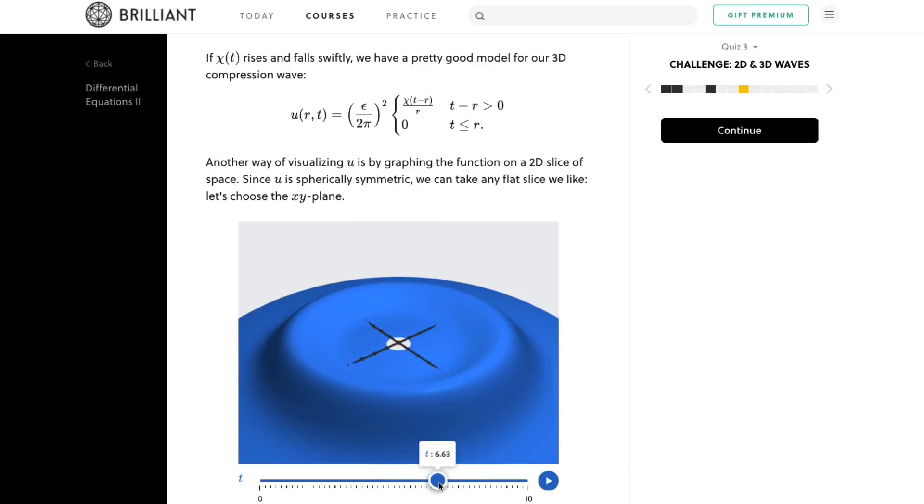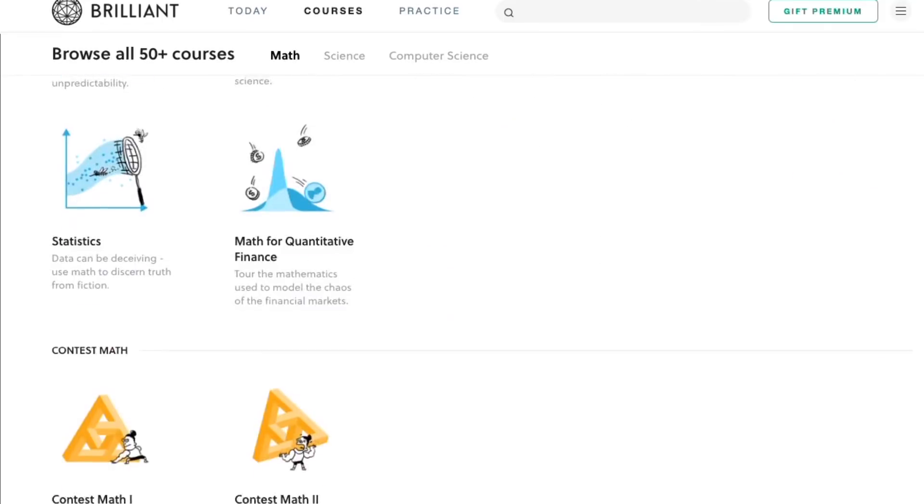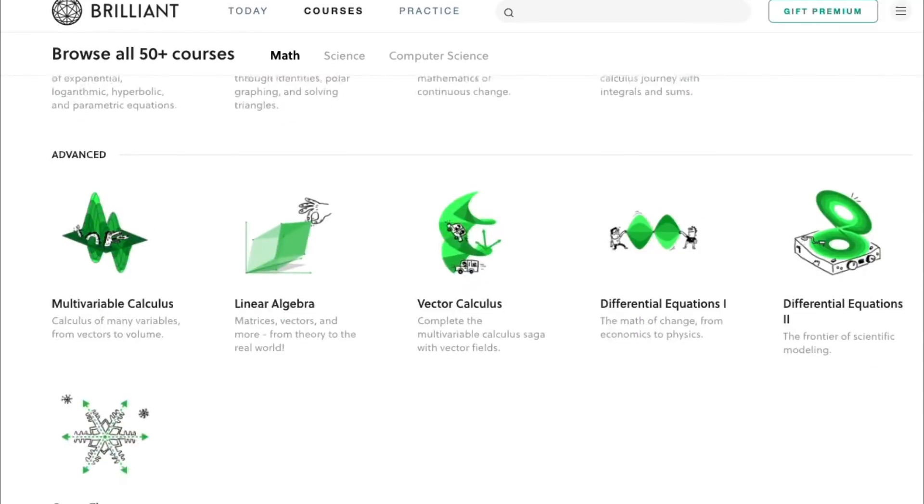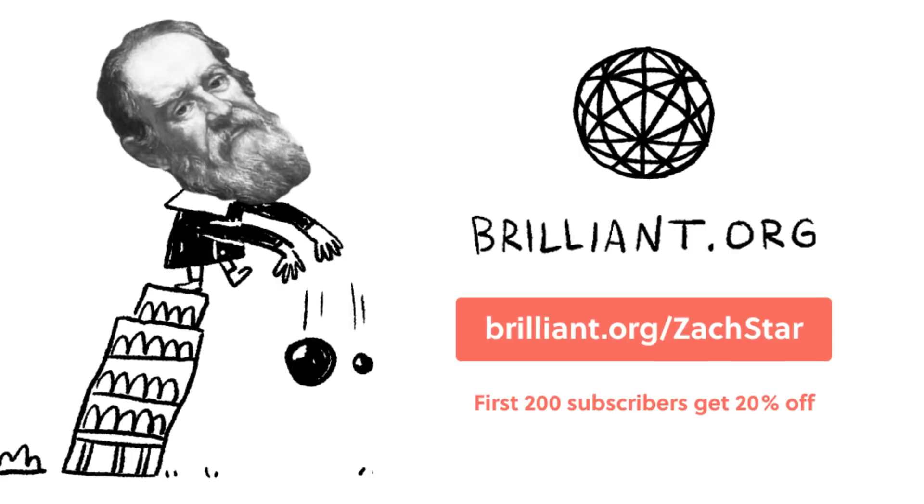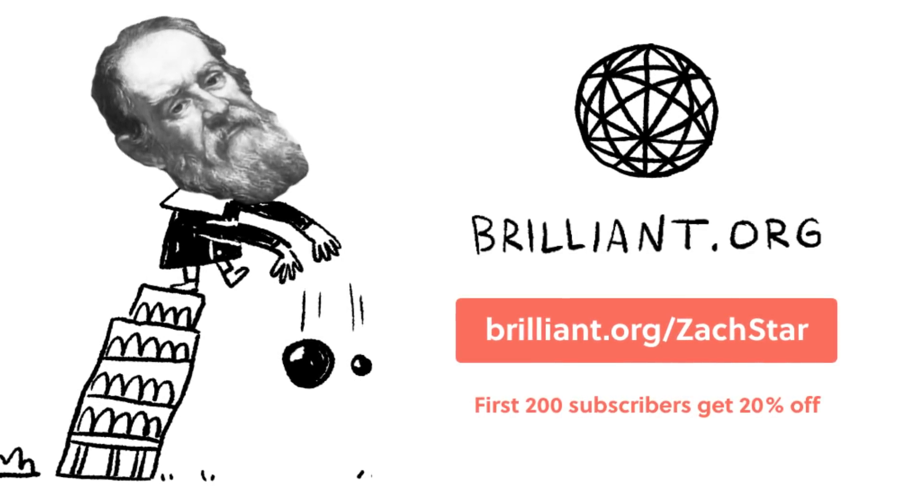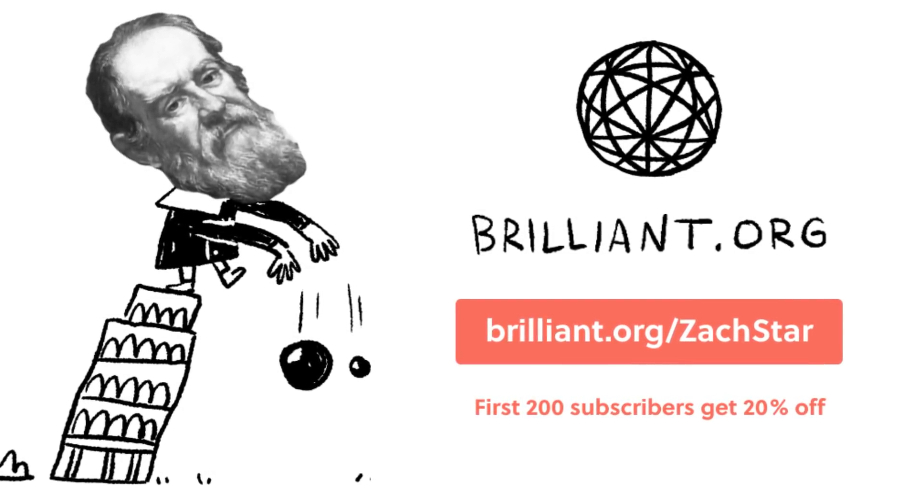Then on top of what we've seen, they have dozens of other courses in math, science, and engineering for you to choose from. Also, the first 200 people to sign up with the link below or by going to Brilliant.org slash Zach Star will get 20% off their annual premium subscription.